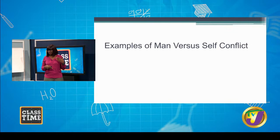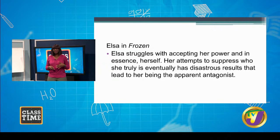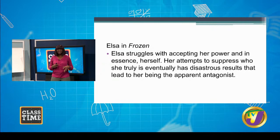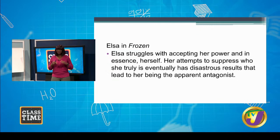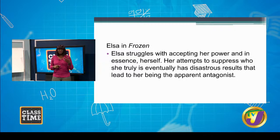Now let's look at examples of this type of conflict — man versus self. If you think of Elsa in Frozen: she has magical powers, she's able to turn things into ice, but she's been struggling to control them. Instead of trying to control her powers, she has been suppressing and hiding them. Then comes a point when she cannot hide them and ends up hurting someone she loves. The story is set up so that we begin to believe she is the antagonist based on how she struggles with this issue.